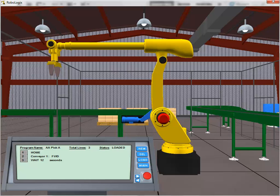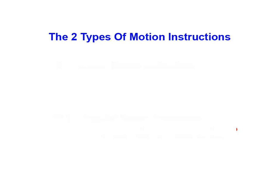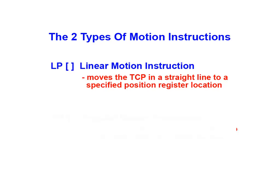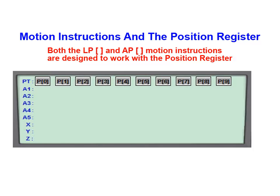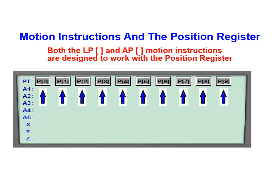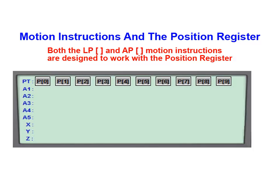We're now ready to add an instruction that'll move the tool center point to a position directly above the box. RoboLogic provides two types of motion instructions. The first is the Linear Motion instruction, which moves the tool center point in a straight line to a specified position register location. The second is the Angular Motion instruction, which moves the tool center point in an angular motion to the specified position register location. Both motion instructions work with the position register, which is capable of storing up to 10 distinct tool center point positions, indexed 0 through 9.